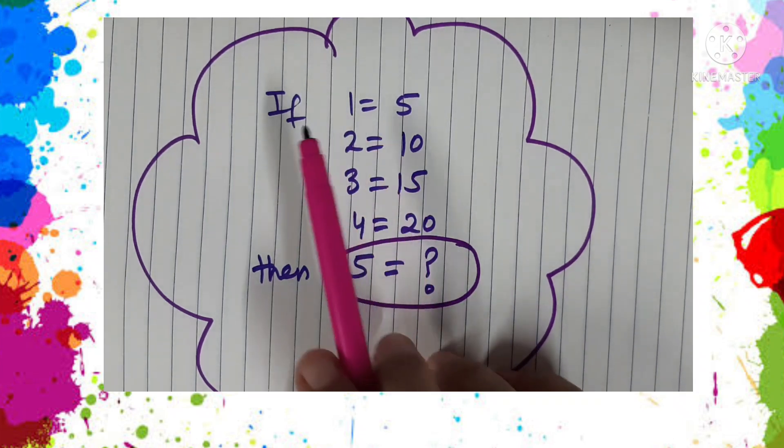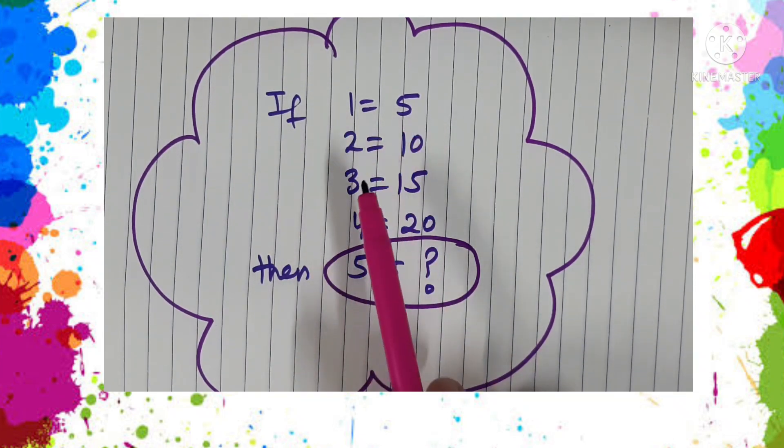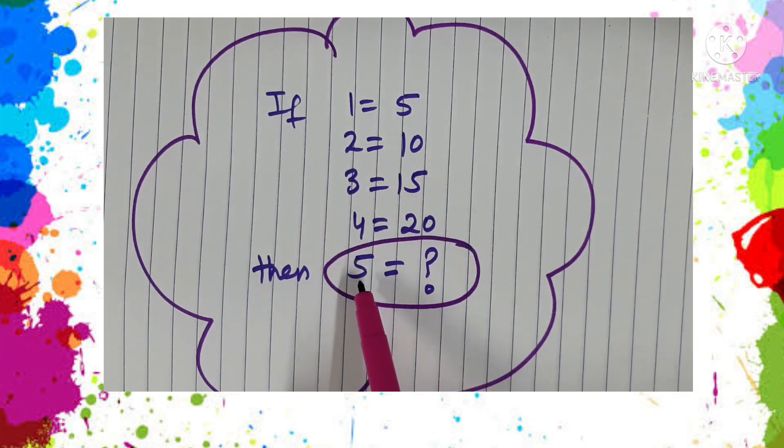So here it is given that if 1 is equal to 5, 2 is equal to 10, 3 is equal to 15, 4 is equal to 20, then what will 5 equal?